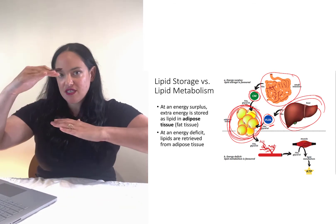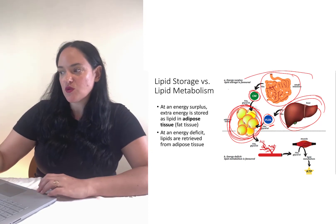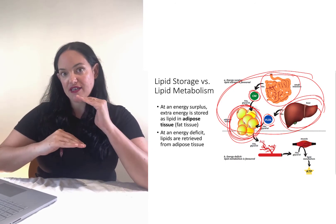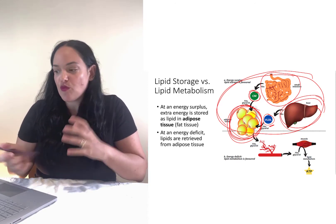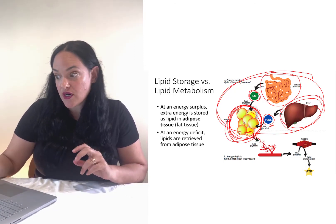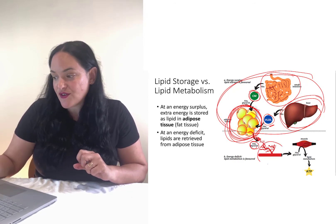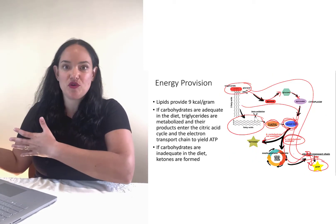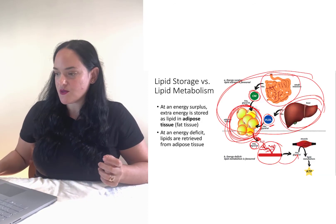When the total amount of energy we consume is higher than the amount we burn, fat storage is favored. Conversely, when we consume energy at a deficit to our needs, we need to get that extra energy from somewhere. Luckily, we have a lot of energy stored in our adipose tissue. Those stored lipids can be broken down, and fatty acids and glycerol can enter the bloodstream and go to our tissues, where cellular respiration can happen to generate energy to fuel the body's needs.